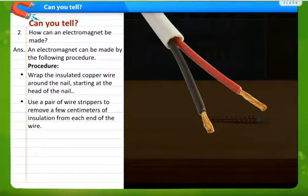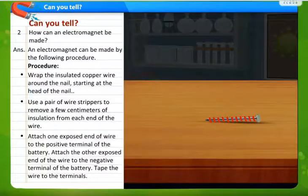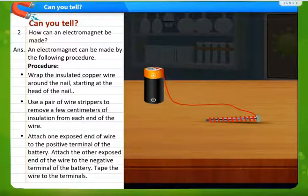Now why do we remove the insulation? Since these wires are insulated, that is coated, we need to remove insulation so that this comes in contact with the coil and electric current can flow through it. So attach one exposed end of wire to the positive terminal of the battery. Attach the other exposed end of the wire to the negative terminal of the battery. Tape the wire to the terminals.